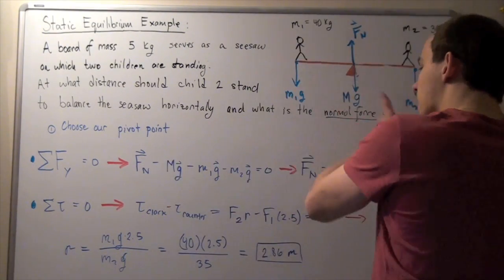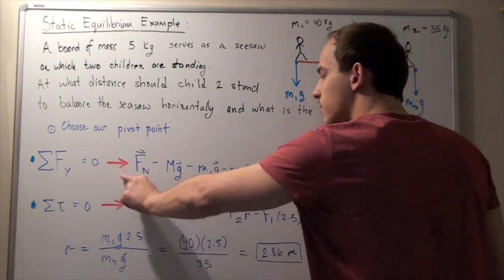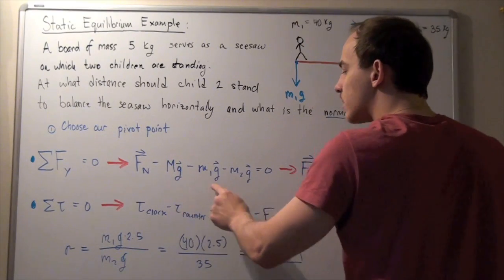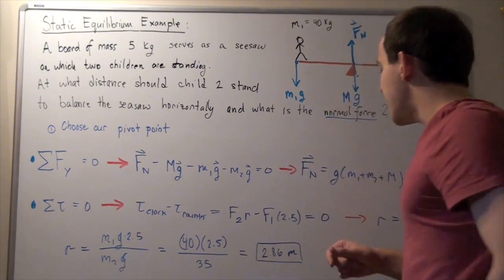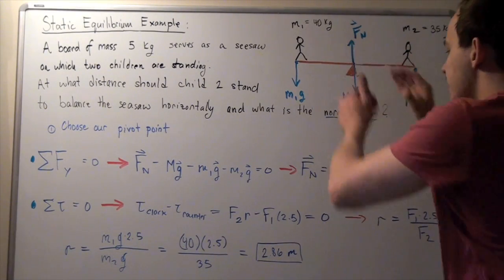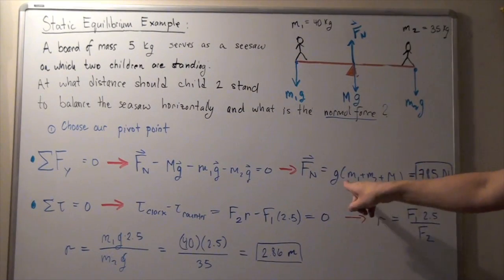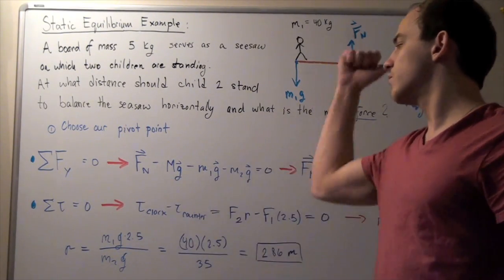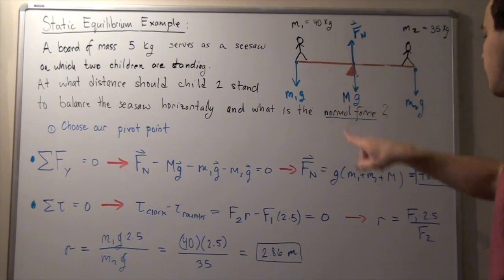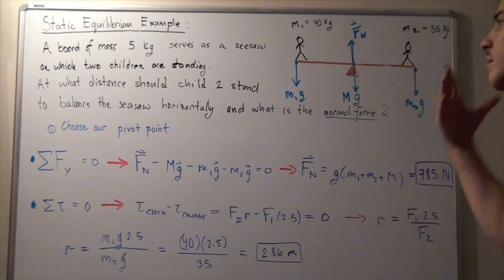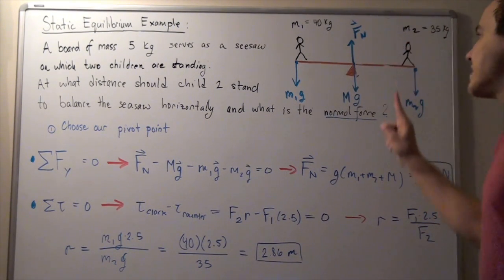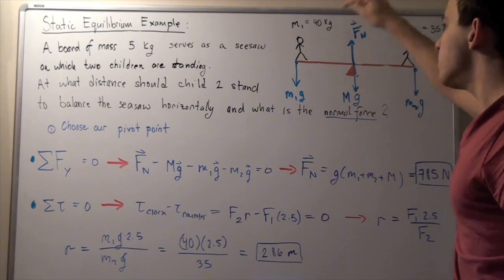Bringing all terms to the right and leaving F_normal on the left, we factor out G. The normal force equals G times (M1 + M2 + M_board). Plugging in our values: 40 plus 35 plus 5 gives 80 kilograms, multiplied by 9.81, giving approximately 785 newtons. This is the upward normal force that the triangle exerts on our board.